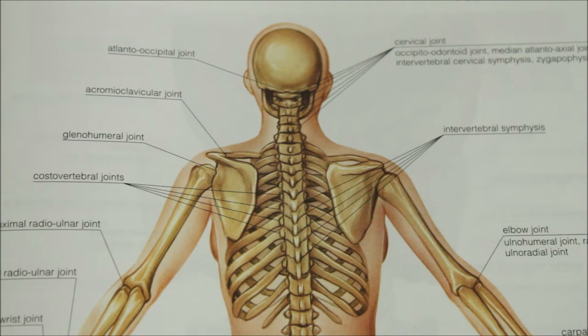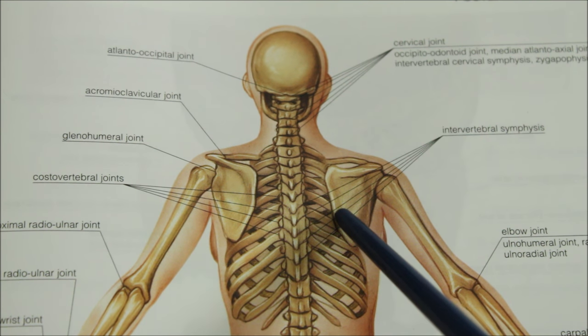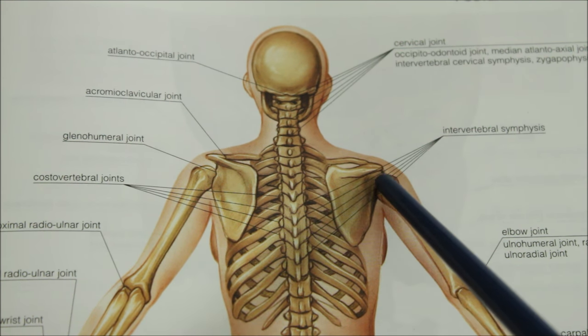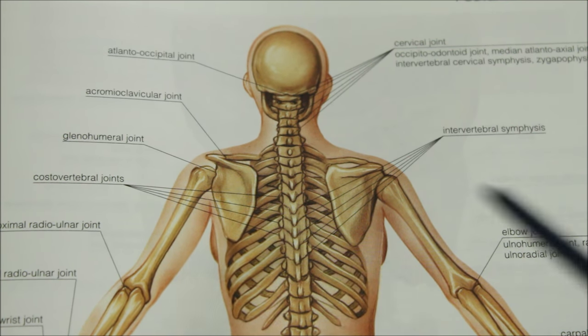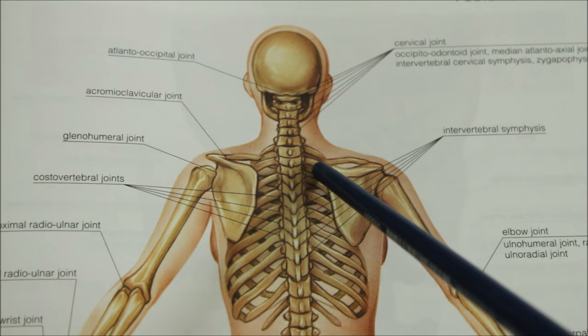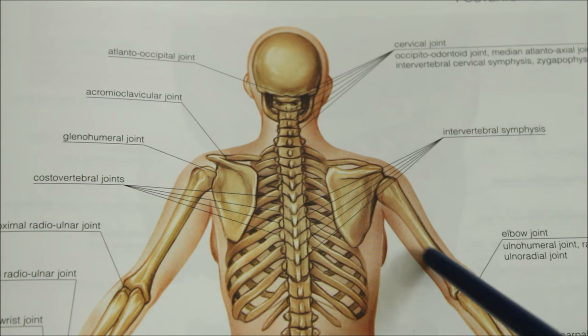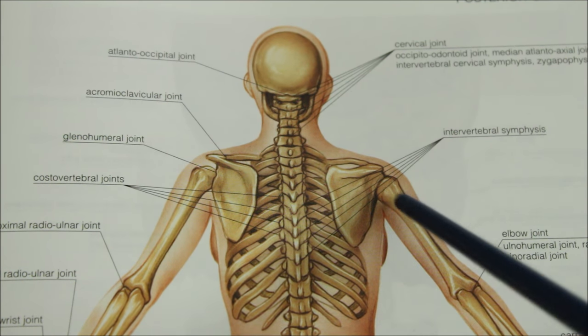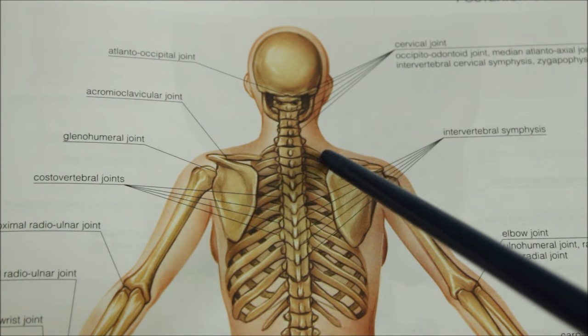Hello friends and welcome to my channel. I am Angelina Isaac and today we will be learning about the scapula, also called the shoulder blade. This diagram shows the posterior aspect of the body. The scapula is a flat triangular bone placed on the posterolateral aspect of the thoracic cage, extending from the level of the second rib to the seventh rib. It provides support to the muscles of the forelimb and an articulation for the humerus at the glenoid cavity. It is joined to the clavicle in front.